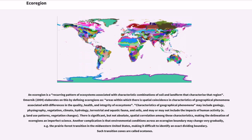There is significant, but not absolute, spatial correlation among these characteristics, making the delineation of ecoregions an imperfect science. Another complication is that environmental conditions across an ecoregion boundary may change very gradually, for example the prairie forest transition in the midwestern United States, making it difficult to identify an exact dividing boundary. Such transition zones are called ecotones.